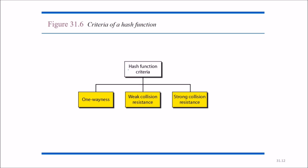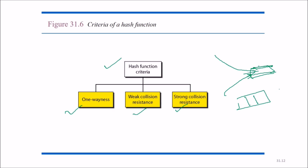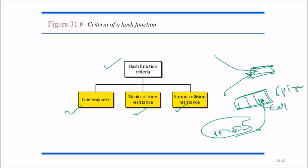Hash function criteria: it should have one-wayness, weak collision resistance, and strong collision resistance. A collision is when two different inputs produce the same hash output — like six pigeons forced into three cages. MD5 was used prior to SHA-1 and was very good until it encountered hash collisions. It has since been updated, and now we use SHA-1.